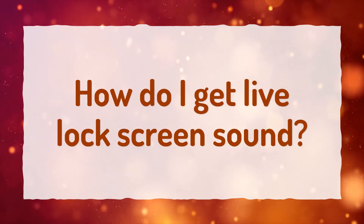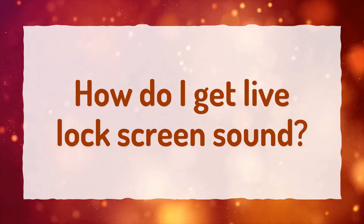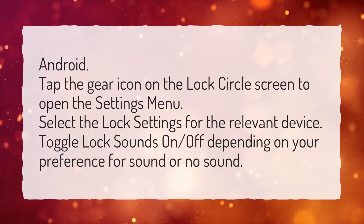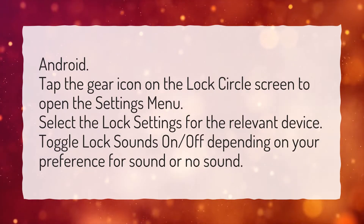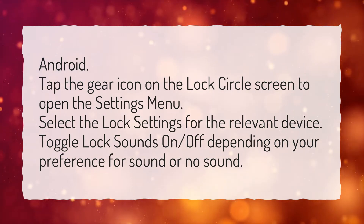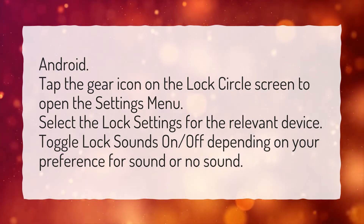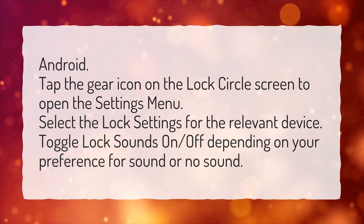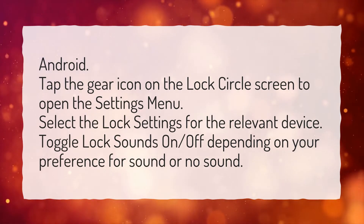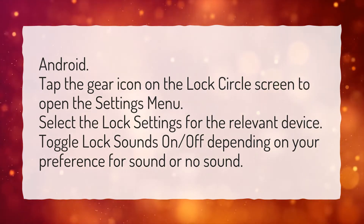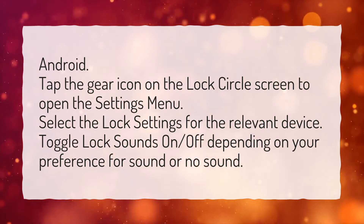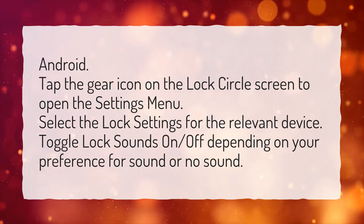How do I get live lock screen sound? Android: Tap the gear icon on the lock screen to open the settings menu. Select the lock settings for the relevant device. Toggle lock sounds on or off depending on your preference for sound or no sound.